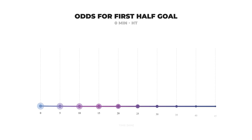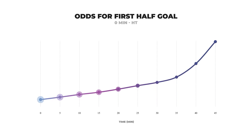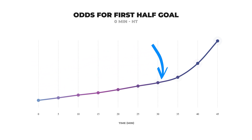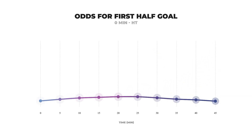Instead of placing the back bet at the start of the game, I tend to place it at some point in play. During the first half the odds will drift out in a somewhat uniform manner the longer there isn't a goal scored. This makes sense — with every minute that passes, there is less time remaining in the half so there's less opportunity for either team to score. The probability of a goal decreases, making the odds increase. So instead of backing at the start, I'll place my bet later in the half to get better odds and a higher potential profit.